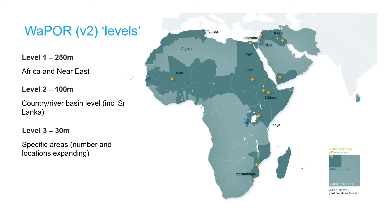In the map, you can see the available locations of version 2 data. This version of the WAPOR data is available for the time period 2009 to 2023.